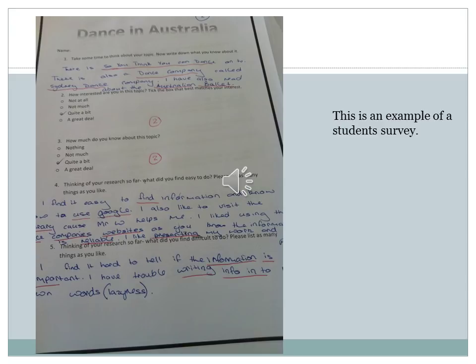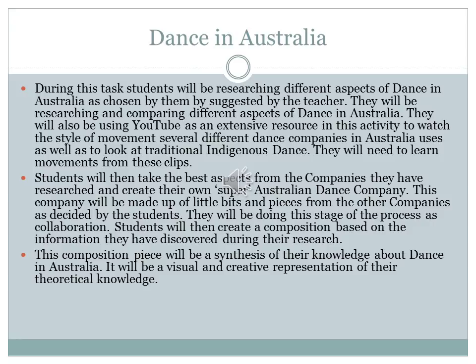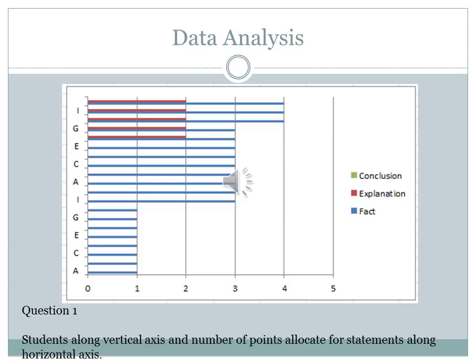This is an example of a student's survey. I have broken down the information according to the SLIM analysis data. A description of the student's task is below. This is a graph of the results of question 1. Please note, at the time of this presentation, questionnaire 3 had not been done. All students had made a factual statement in questionnaire 1, and in questionnaire 2 they had doubled the amount of fact statements made. The students are along the vertical axis and the number of points allocated for statements are along the horizontal axis. There are 10 students in this class, labelled A to J, repeated to represent questionnaire 2. At this point, no conclusive statements have been made; I hope to see this emerge after questionnaire 3 is completed.